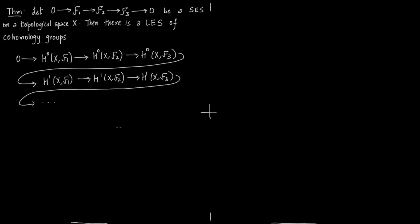How do we get this long exact sequence? As I said before, we have to first write down the complexes and then form the maps between the complexes. Notice that H⁰(X, F₁) = F₁(X), H⁰(X, F₂) = F₂(X), and H⁰(X, F₃) = F₃(X). This we have already shown in a previous slide.